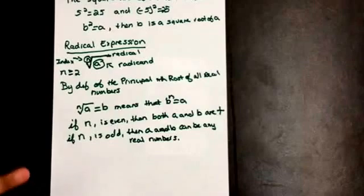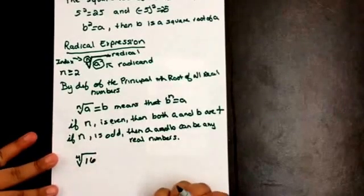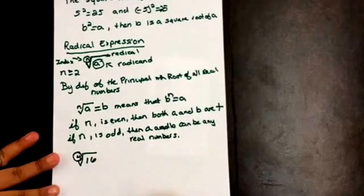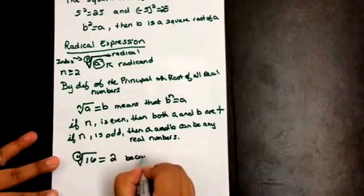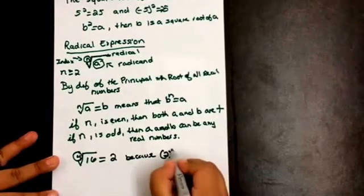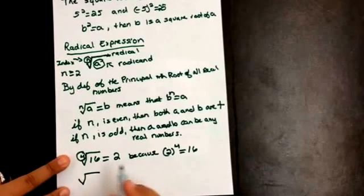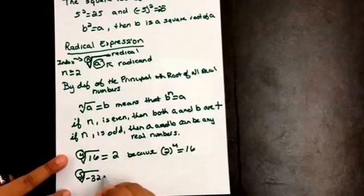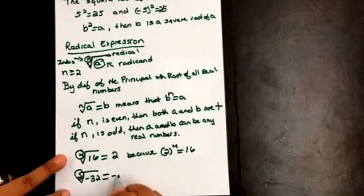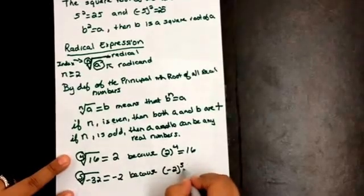Let's do an example. The fourth root of 16: since our index is 4 and it's even, our answer will be positive — 2, because 2 to the fourth equals 16. Let's do another example. What if we have the fifth root of negative 32? Since our index n is odd, our answer can be either positive or negative. Our answer will be negative 2, because negative 2 to the fifth equals negative 32.